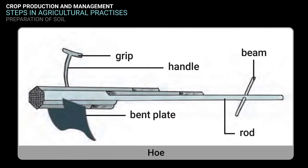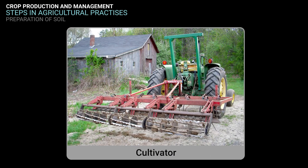The hoe is a simple tool used for removing weeds and loosening the soil. It has a long rod of wood or iron, with a strong, broad and bent plate of iron fixed to one end that works like a blade, and it is pulled by animals. The cultivator is a mechanical implement for breaking up the ground and uprooting weeds. Nowadays, plowing is done by a tractor-driven cultivator, which saves a lot of labor and time.